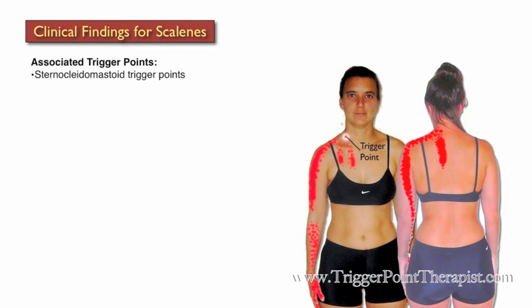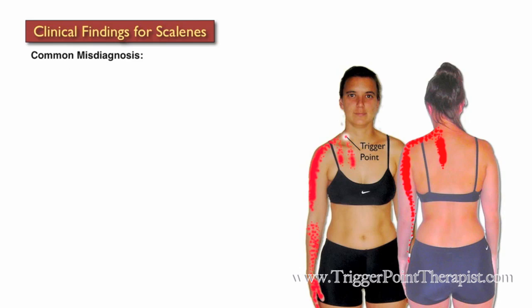Trigger points in the sternocleidomastoid, levator scapula, and upper trapezius muscles are all associated with trigger points in the scalene muscles. Some common misdiagnoses for active trigger points in the scalene muscles include carpal tunnel syndrome, C5–C6 radiculopathy, and thoracic outlet syndrome.